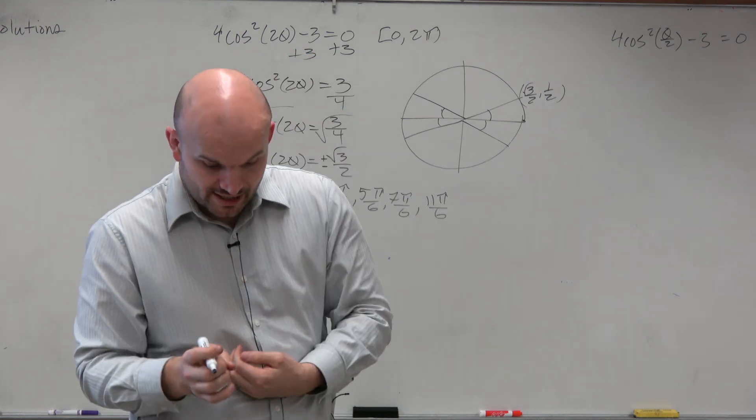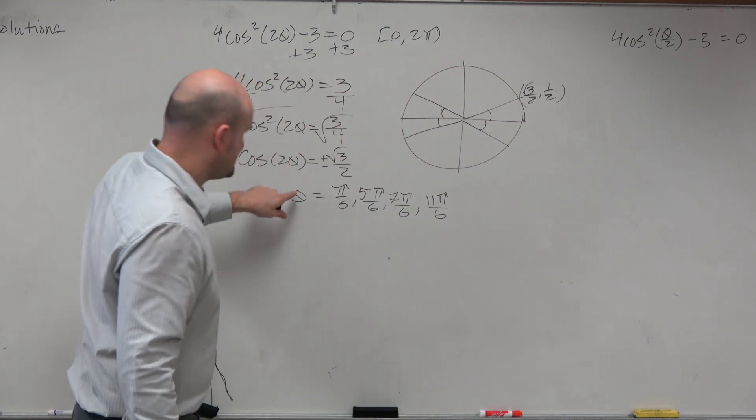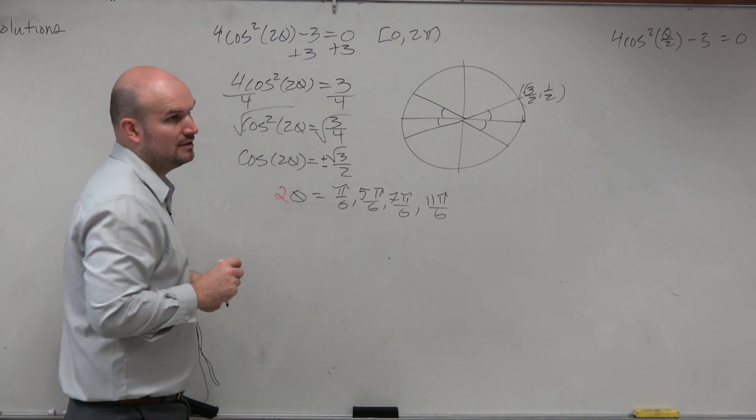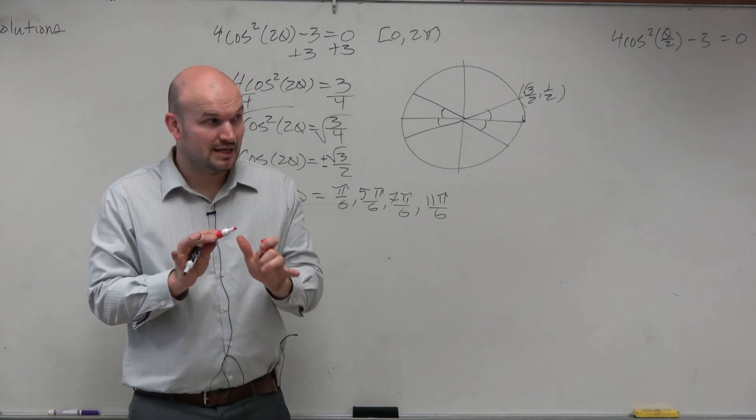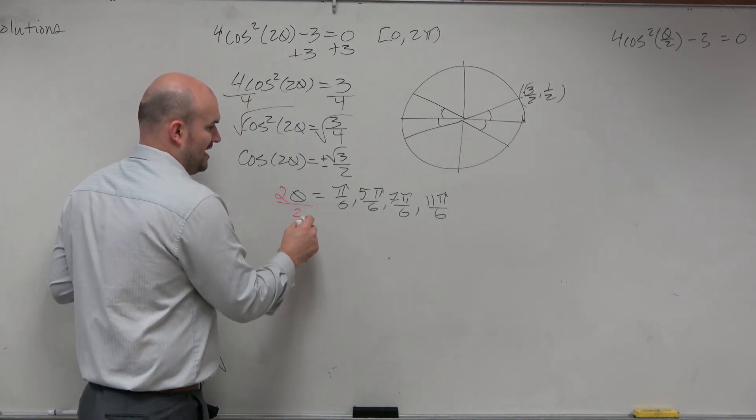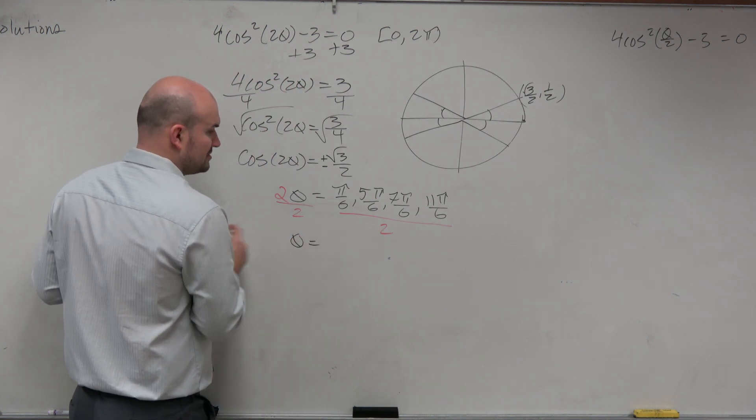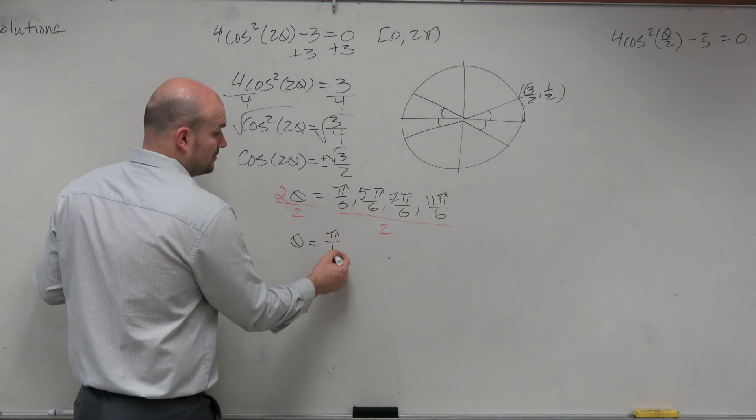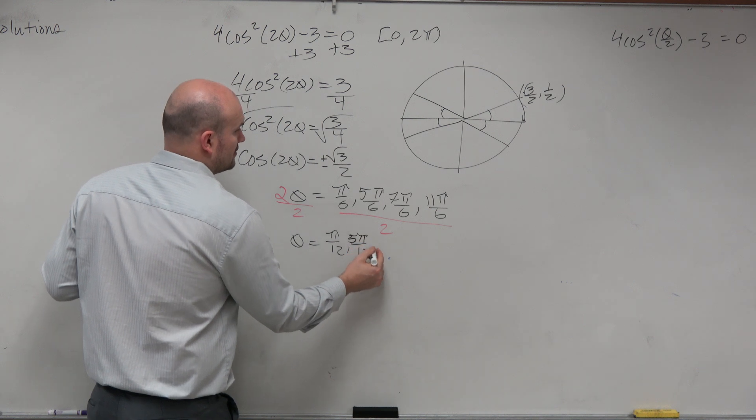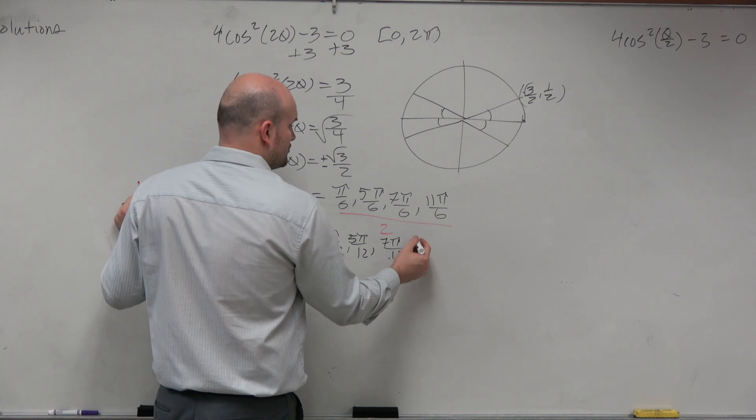Now the difference here is we're going to change a little bit, because the problem isn't saying solve for theta. The problem is now saying solve for 2 theta. So all we have to do extra is just undo multiply by 2. So if we divide by 2, theta equals pi over 12, 5 pi over 12, 7 pi over 12, and 22 pi over 12.